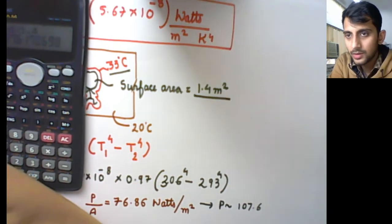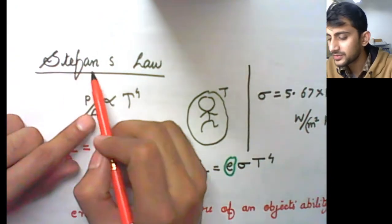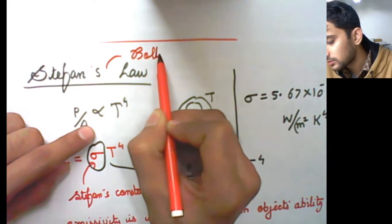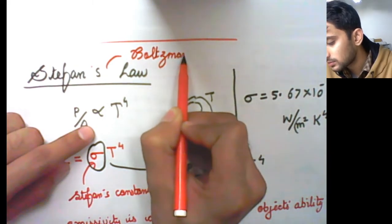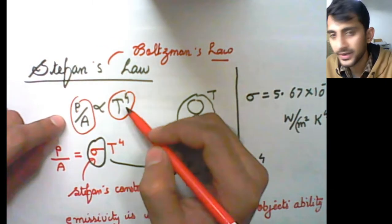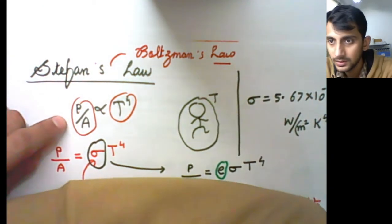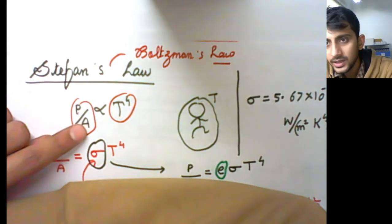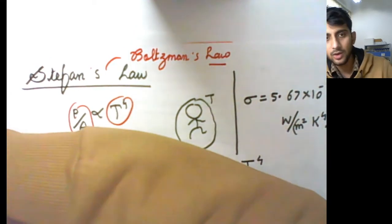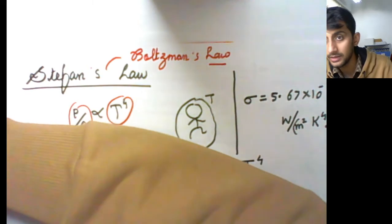This is all about Stefan's law, also called the Stefan-Boltzmann law, which relates power to the temperature of a body. For example, if you know how much power is radiated per unit area by the Sun, you can estimate its temperature. By analyzing the power per unit area radiated, you can estimate the temperature of stars, the Sun, or any body.